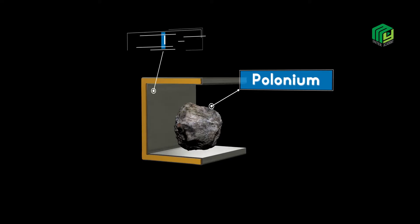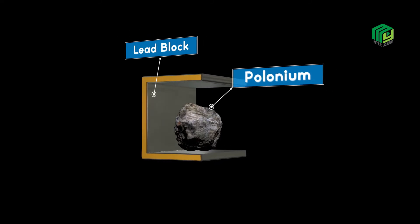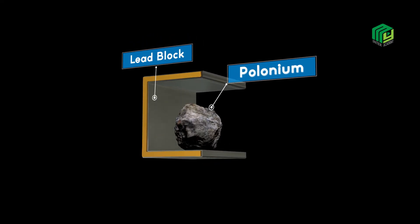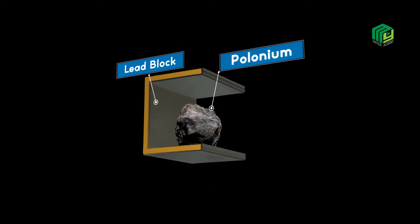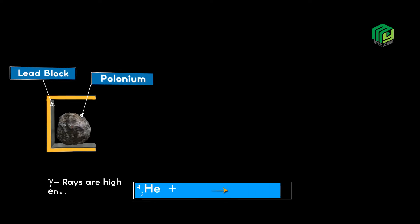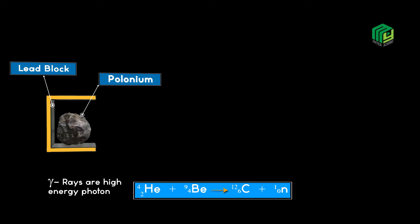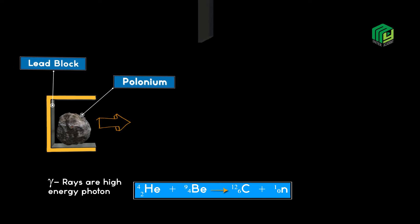The purpose of using lead block is that lead does not allow the radiations to pass through from all directions. A small opening is given in the lead box, and only radiations can pass through from this opening.